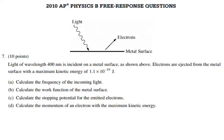This question is from AP Physics B from 2010, related to modern physics. The question states that light of wavelength 400 nanometers is incident on a metal surface. Electrons are ejected from the metal surface with a maximum kinetic energy of 1.1×10⁻¹⁹ joules. They ask you to calculate: the frequency of the incoming light, the work function of the metal surface, the stopping potential for the emitted electrons, and the momentum of an electron with maximum kinetic energy.